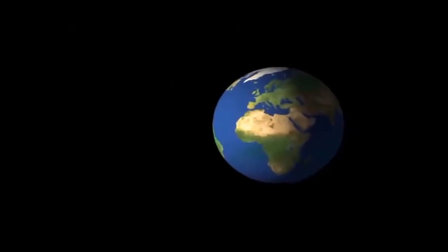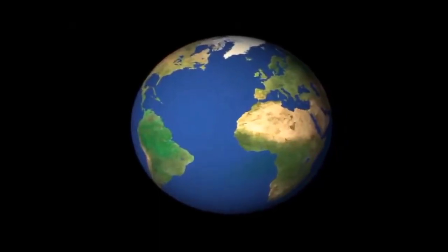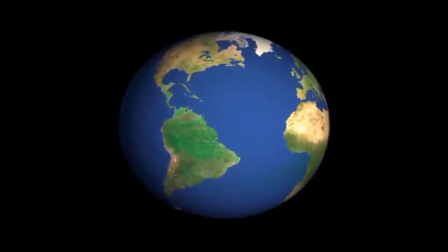Earth Coordinate System is a system that uses a three-dimensional spherical surface to determine location on the Earth. Any location on the Earth can be referenced by a point with longitude and latitude coordinates.